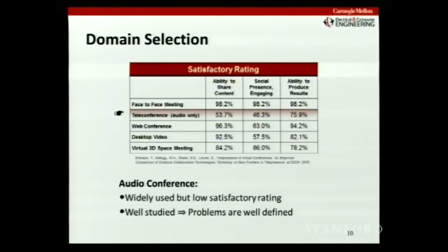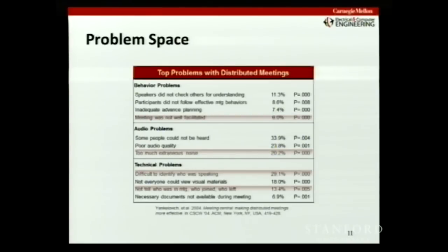We chose the teleconference domain for a number of reasons. First, it's very popular but has pretty low satisfaction ratings compared to face-to-face meetings and web conferences. Also, it's a very well-studied domain, so the problems are well-defined, as in this compilation by Yankulovitch, who surveyed participants after a number of meetings. He grouped the problems into three categories: behavioral, audio, and technical. We're going to focus on four of these problems because they represent a large percentage.